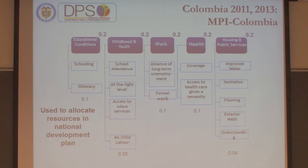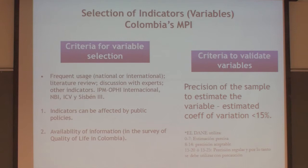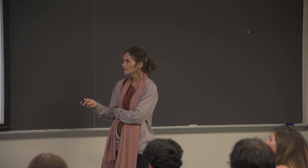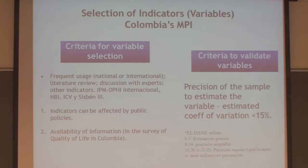How did they justify the selection of variables? In addition to each indicator having to reflect goals in the National Development Plan, there were three criteria. First, they wanted indicators that were frequently used nationally or internationally and seemed rigorous across a wide variety of subject experts — a criteria of rigor and precision. Second, indicators needed to be able to be affected by public policies.